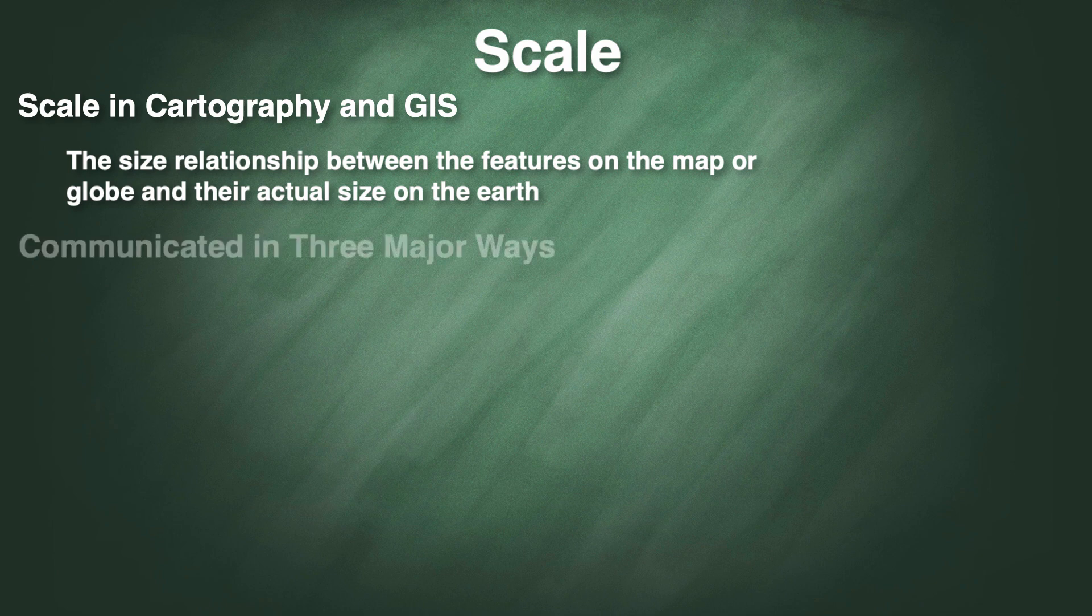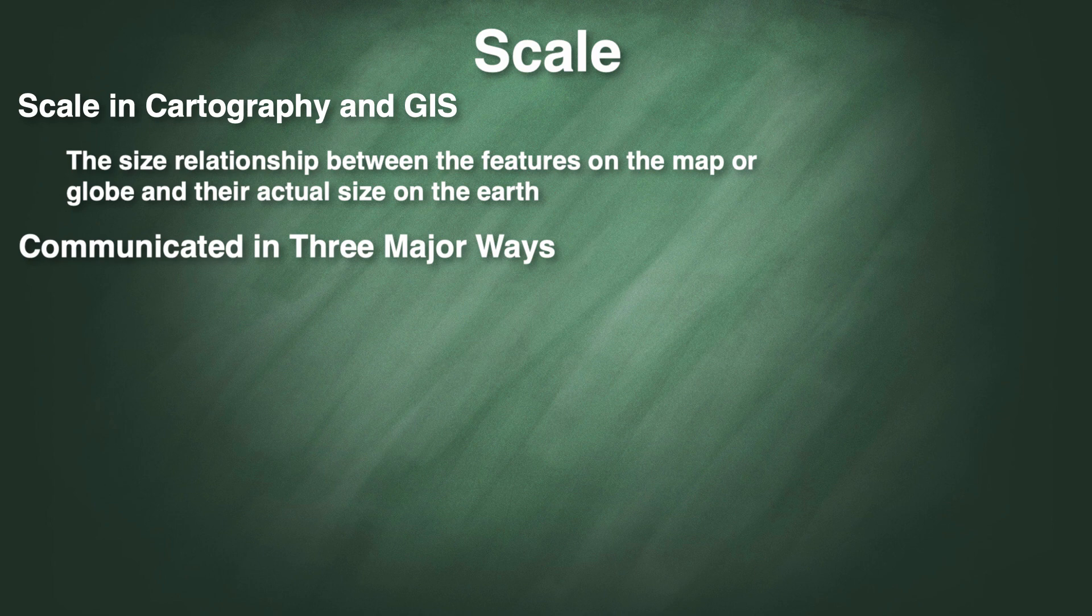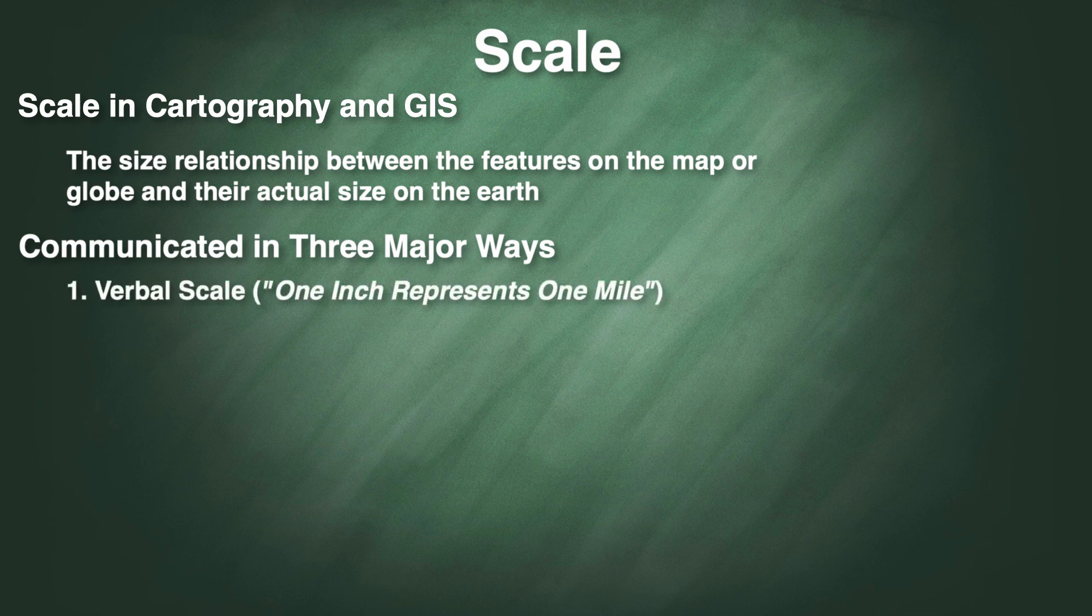There are at least three major ways that this size relationship can be communicated. You might simply tell someone that one inch on a particular map represents one mile on the earth, or that one inch on the map would represent 2,000 feet on the earth. This is called a verbal or a statement scale.